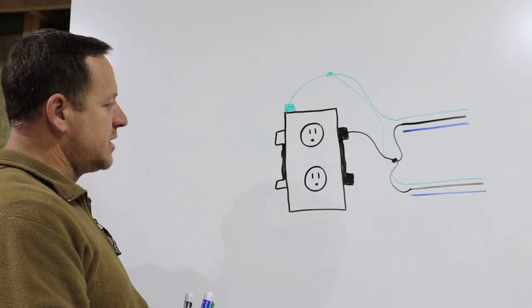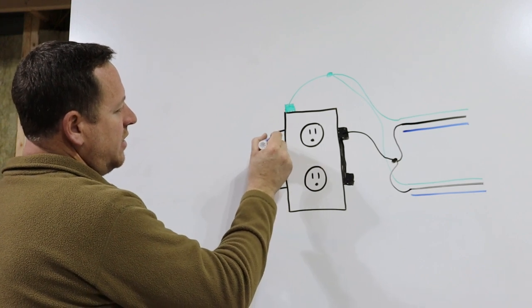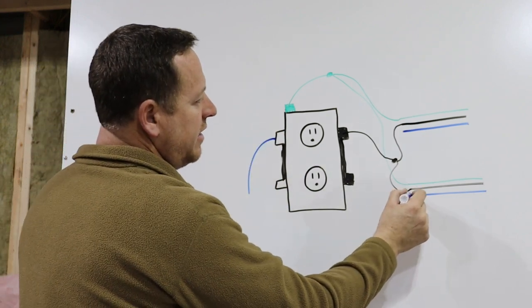It's the same principle with the silver screws for your neutral. Six inch piece of wire.